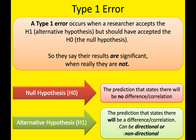So with the Type 1 error, the researchers have accepted the H1 — either directional or non-directional — saying that yes, we've done our investigation and there's some kind of significant difference or correlation. But actually, they've made a mistake. When we say error, we're talking about a mistake. There is no difference or correlation, and so they should have accepted the null, the H0.